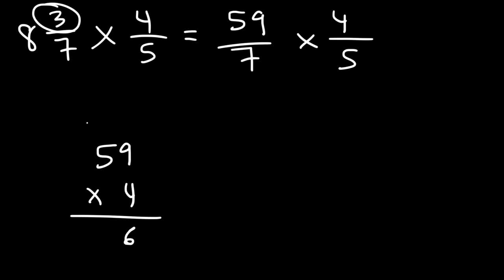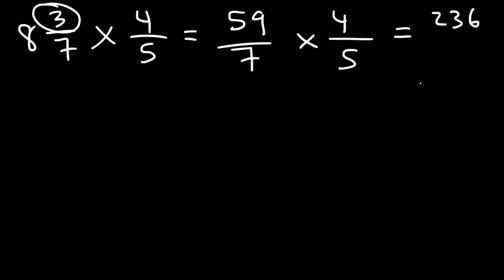So we need to multiply 59 by 4. 4 times 9 is 36, carry over the 3. 4 times 5 is 20 plus 3, that's going to be 236. And so this is 236, and then we have 7 times 5 which is 35.